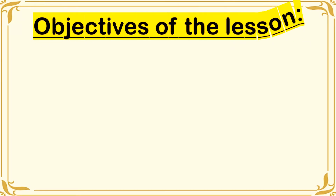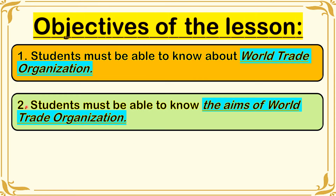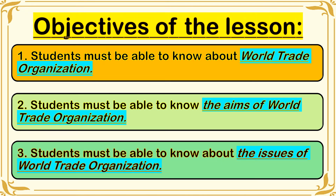For the objectives of the lesson: the first one is students must be able to know about the World Trade Organization. Students must be able to know the aims of the World Trade Organization. At the end of our discussion, I expect that all of you already know what the World Trade Organization is, what is the purpose of building it, and what are the problems that countries encounter when they do international trade.